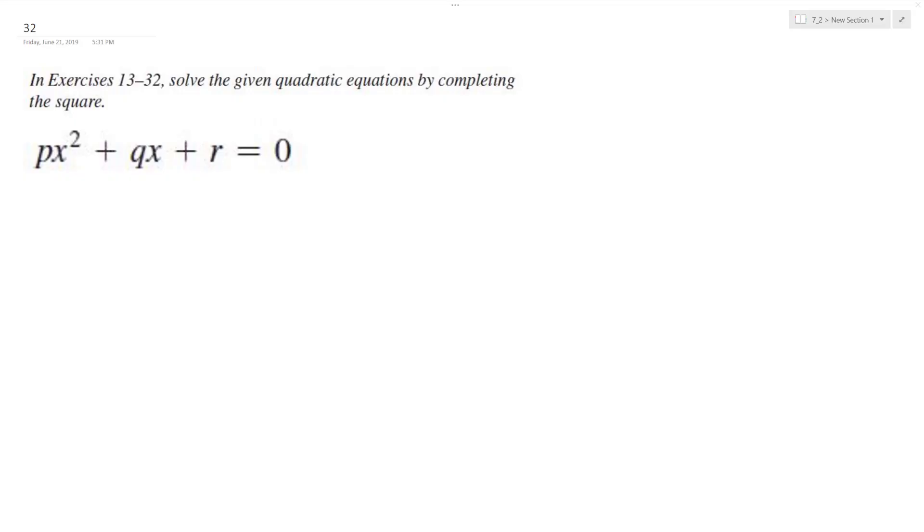All right, let's solve the following problem by completing the square. So first thing we do is subtract r as a constant from both sides. So we have px squared plus qx is equal to negative r.